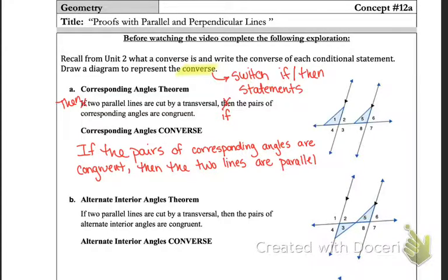Original statements, we know the lines are parallel. It tells us certain things about the angles. With the converses, we just switch them. So alternate interior, if the alternate interior angles are congruent, then the lines are going to be parallel.